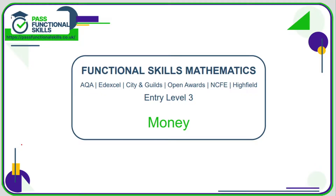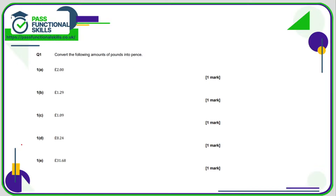Let's take a look at the money questions. All of these are non-calculator with the exception of questions seven and eight. Here we're converting pounds into pence. We know that one pound equals 100 pence, so to go from pounds into pence we're multiplying by 100, so all we need to do is multiply by 100.